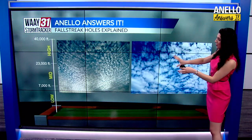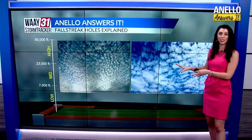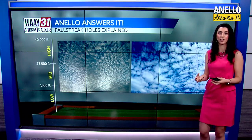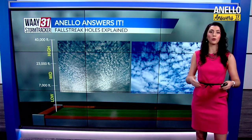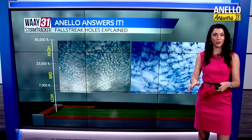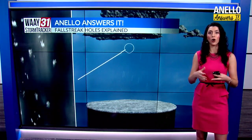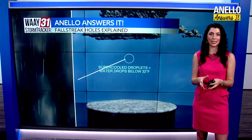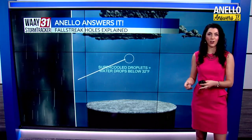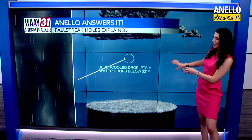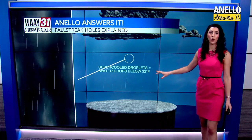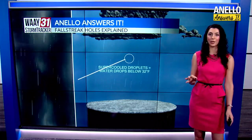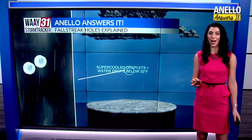First, we start with alto cumulus or cirro cumulus clouds, which are those puffy cumulus clouds but sitting at mid and upper level elevations in the atmosphere rather than their typical lower elevation. And here's the interesting thing — the water in those clouds is what's called supercooled. That means the water is sitting at a state below 32 degrees Fahrenheit, which normally would mean it turns to ice. But not with supercooled water — those droplets remain liquid, but only for a matter of time.